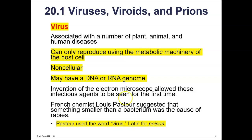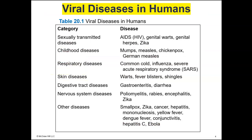Viruses may have either a DNA or an RNA genome — a virus can have DNA or RNA, but not both. Louis Pasteur is the scientist known for discovering pasteurization, but he is also the first to use the word 'virus,' which is Latin for poison. Table 20.1 lists several diseases in humans that are caused by viruses — viral diseases, not bacterial or protozoans.